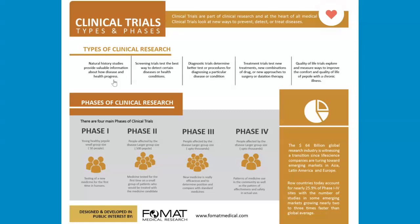Quickly, the differences between phases one, two, three, and four: Phase one involves a small group size — young, healthy people — testing a new medicine for the first time in humans. Then in phase two, you move on to a larger group, typically around 500 people or in the hundreds magnitude, comprised of people affected by the disease, with the medicine tested for the first time on a small group of patients who would be treated with the medicine candidate.